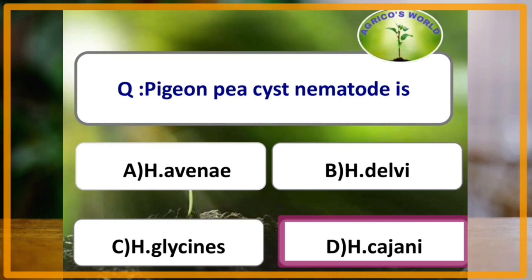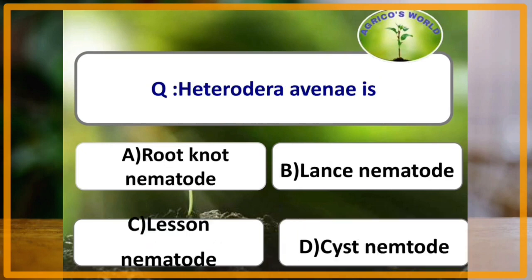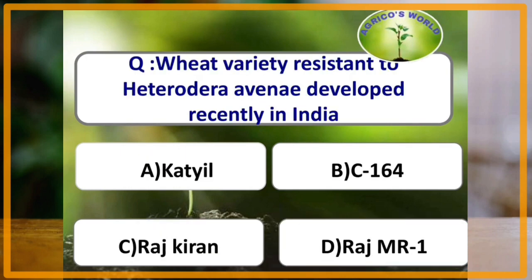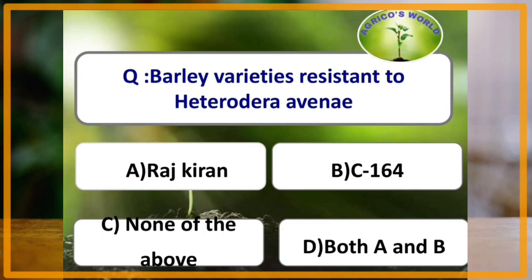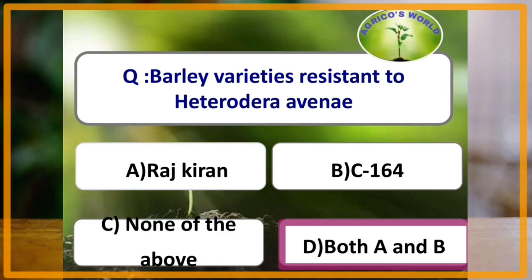Cyst nematodes mostly belong to the genus Heterodera; the species name is given according to the crop they attack. Heterodera avenae is a cyst nematode; wheat variety resistant to Heterodera avenae developed recently in India is Raj MR1. Heterodera avenae attacks both wheat and barley. Barley varieties resistant to Heterodera avenae are Raj Kiran and C164.